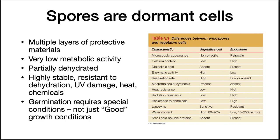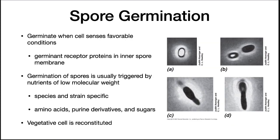Germination requires special conditions, not just 'good' growth conditions. Spores germinate when cells sense favorable conditions, and what is considered favorable depends upon the species. Germination receptor proteins in the interspore membranes will sense various small metabolites. Germination of spores is usually triggered by nutrients of low molecular weight such as amino acids, purine derivatives, and sugars. When the appropriate signal is detected, the spore will rapidly hydrate, digest its cortex and spore coat, and the vegetative cell is reconstituted.